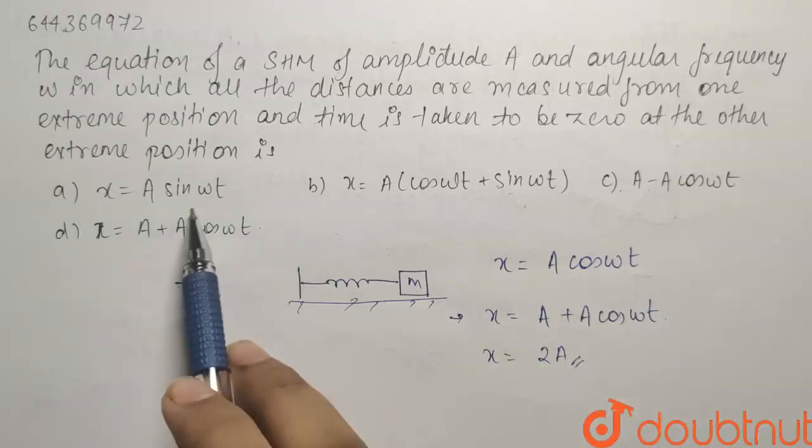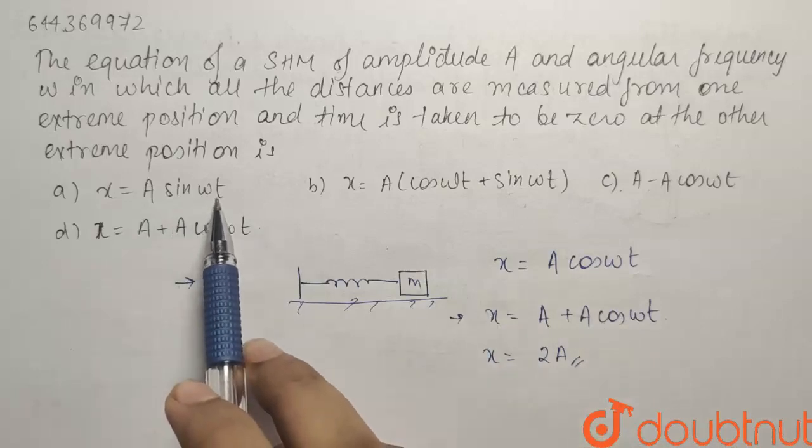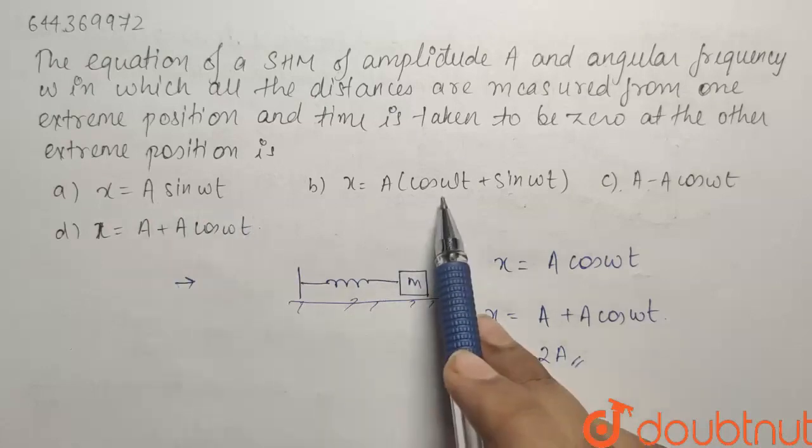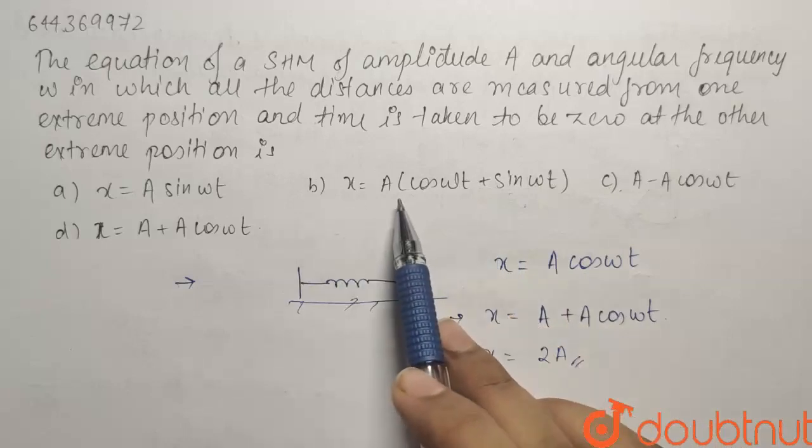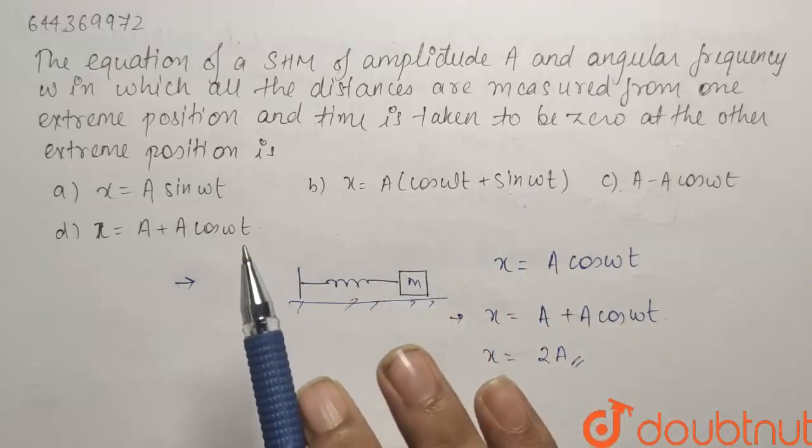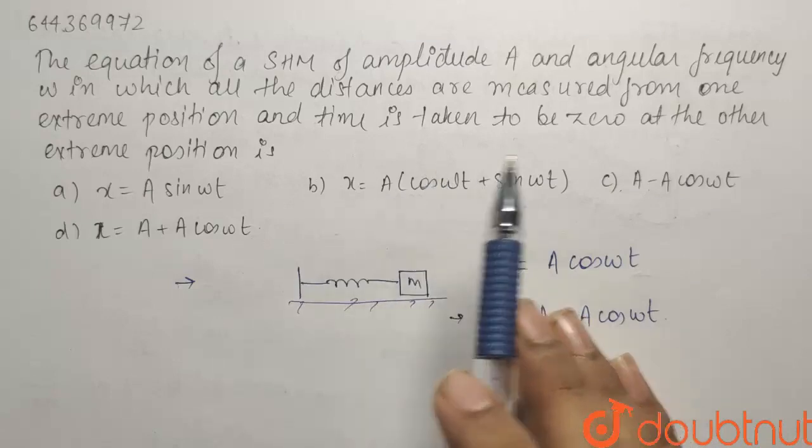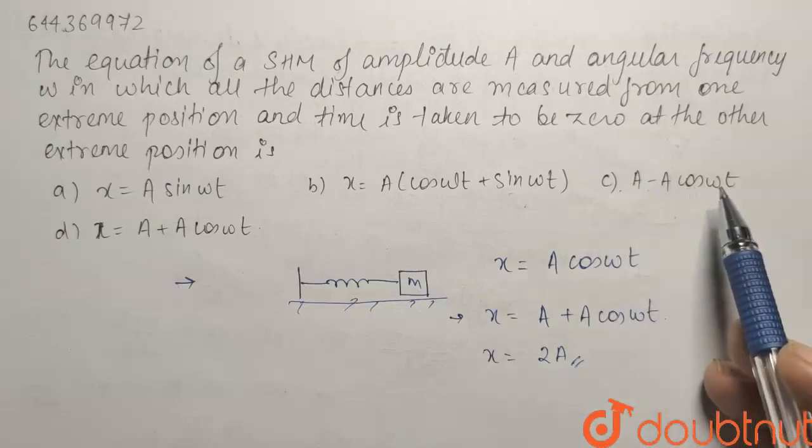Now, if we want to find out whether these options are correct or not, let us put t equals to zero here. What you will have? X equals to zero. This is not the correct option. From both these equations, you are going to get X equals to A, which is the initial extreme position. But we have been asked to see from the other extreme position, and C will again give X equals to zero.